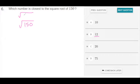12 is the closest one, because based on our times tables, 12 times 12 is 144, and we know the square root of 144 is 12. 150 is very close to 144,